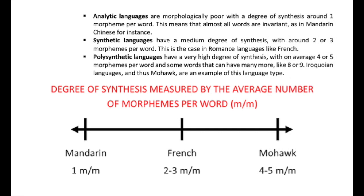We can identify three main language types: analytic languages are morphologically poor, with around one morpheme per word, as in Mandarin Chinese. Synthetic languages have a medium degree, with around two or three morphemes per word, as in Romance languages like French. Polysynthetic languages have a very high degree of synthesis, with on average four or five morphemes per word — and some words can have many more, like eight or nine. Iroquoian languages, and thus Mohawk, are an example of this type.